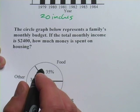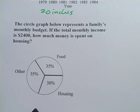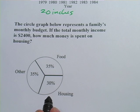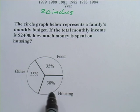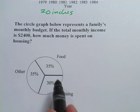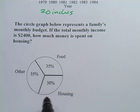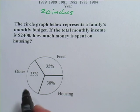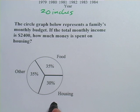Let's look at another one. This one says the circle graph below represents a family's monthly budget. If the total monthly income is $2,400, how much money is spent on housing? So this family spends 35% of their money on food, 30% on housing, and 35% on everything else. The question is how much are they spending on housing?